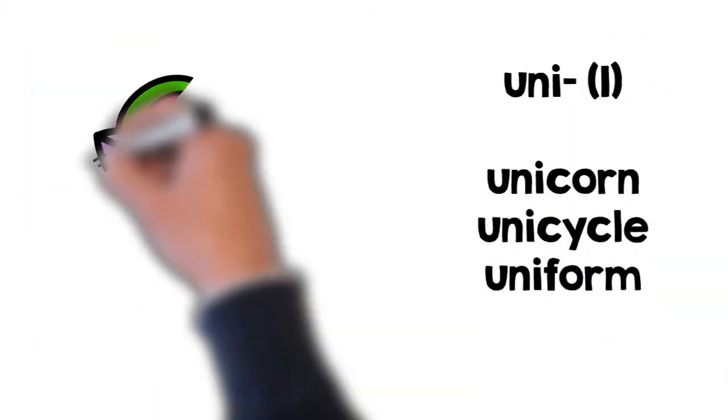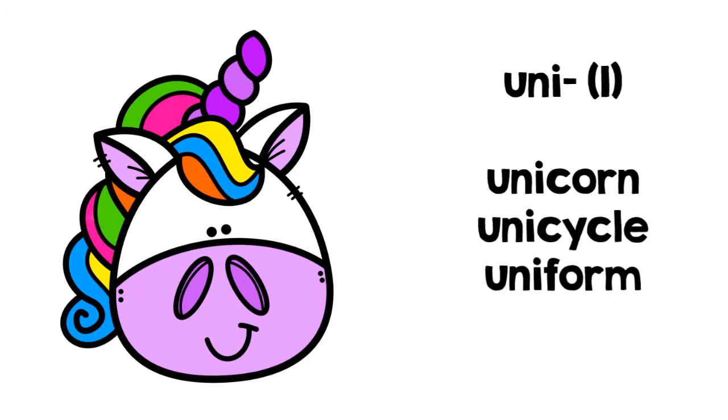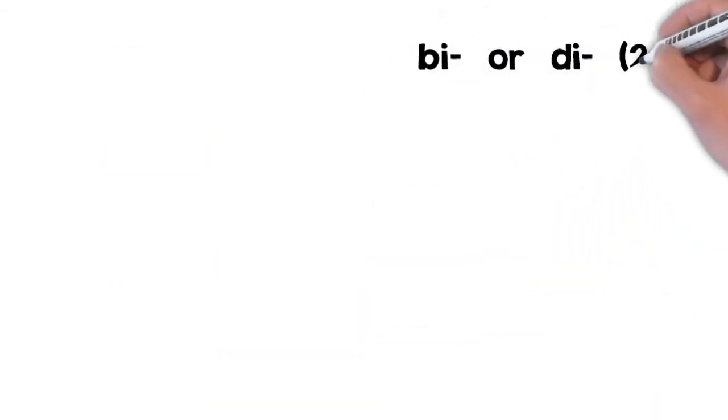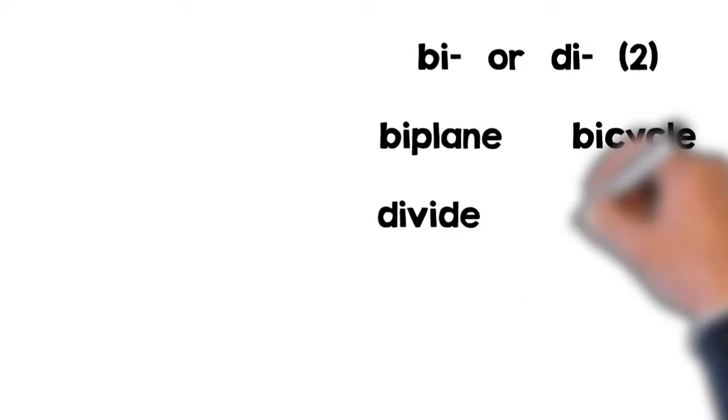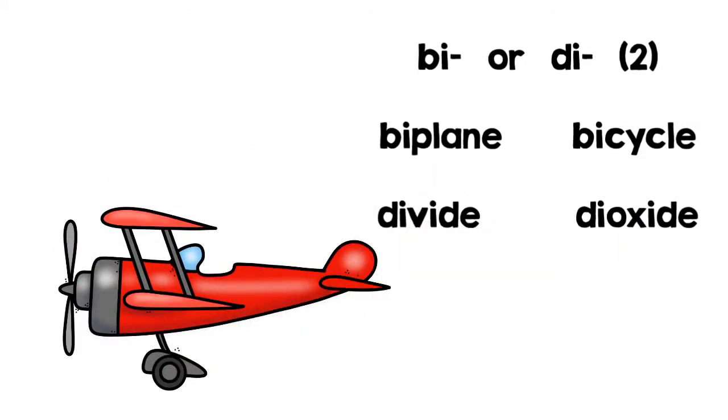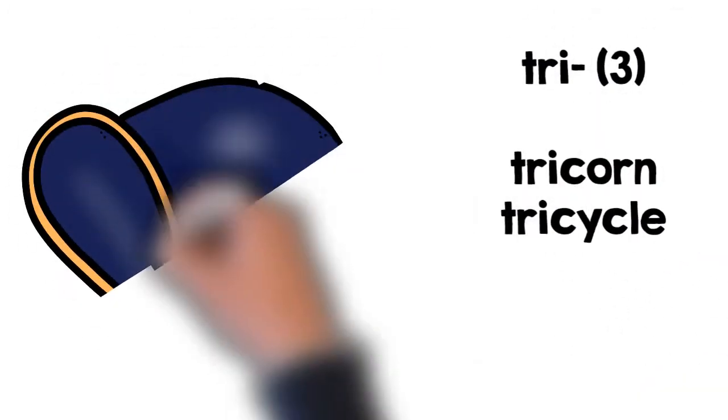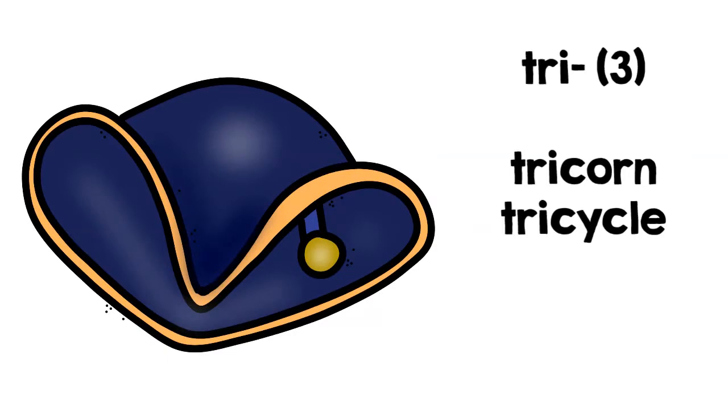Uni means one: unicorn, unicycle, uniform. Bi or di mean two: biplane, bicycle, divide, dioxide. Tri means three: tricorne, tricycle.